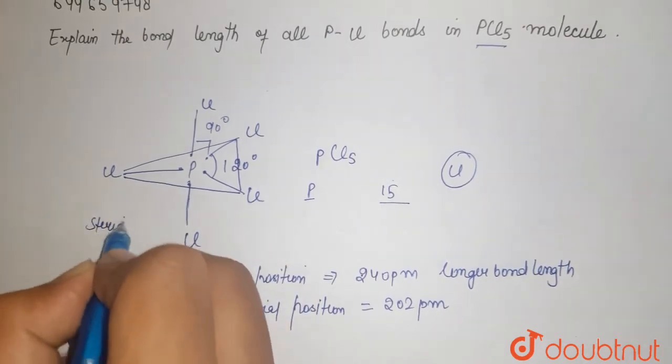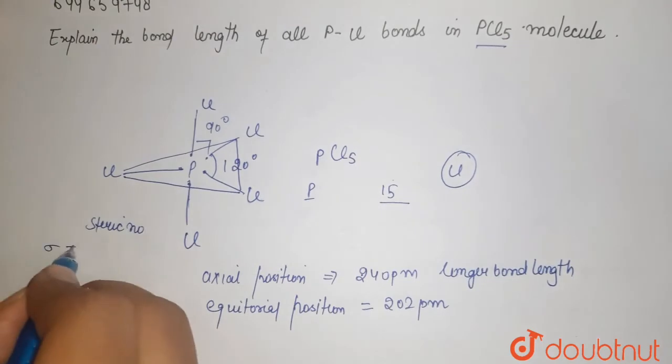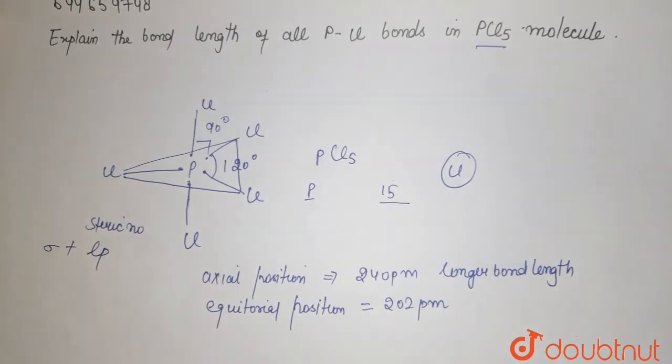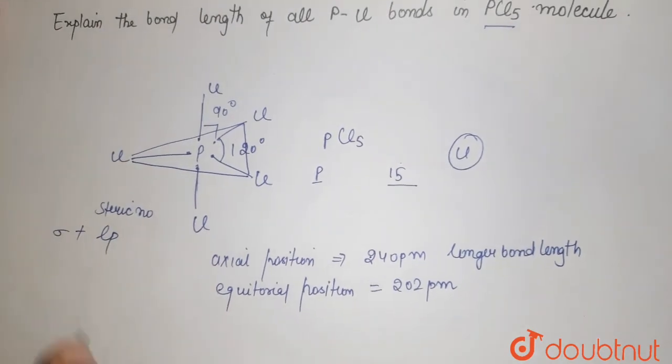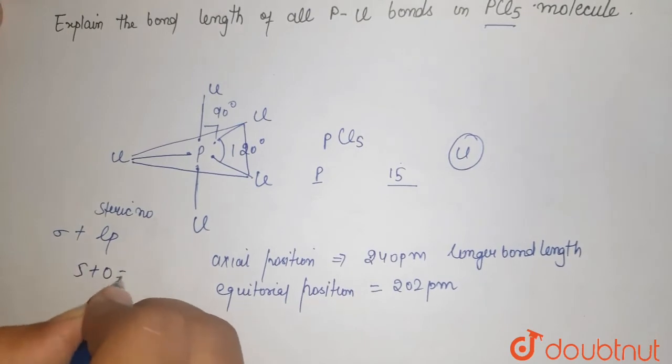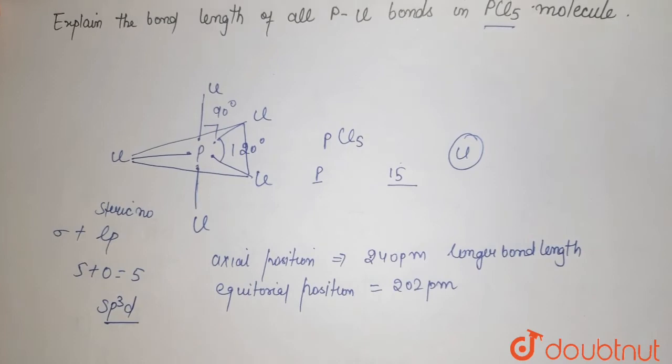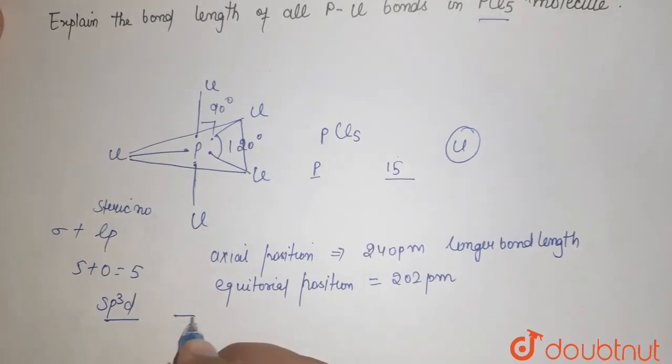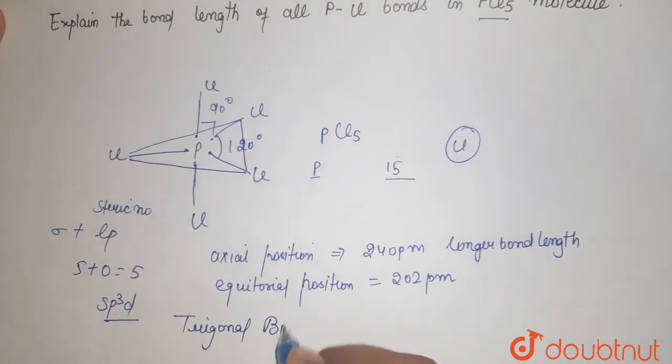Here we have no lone pair, so we have 5 sigma bonds and no lone pair. Steric number is 5, so the hybridization is sp3d. Talking about its geometry, it is trigonal bipyramidal.